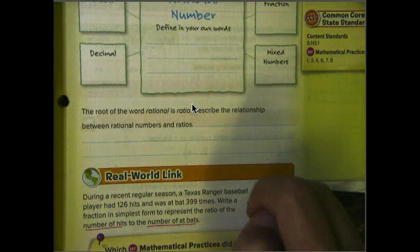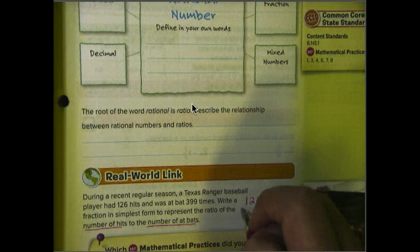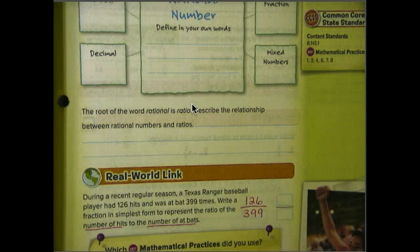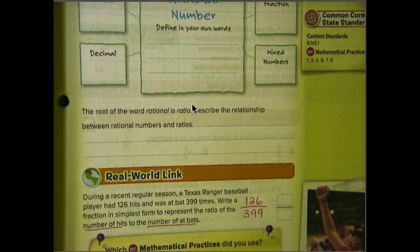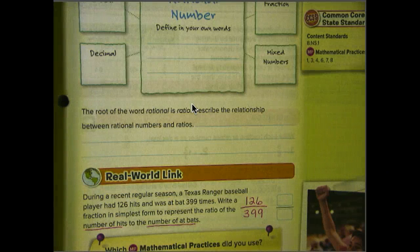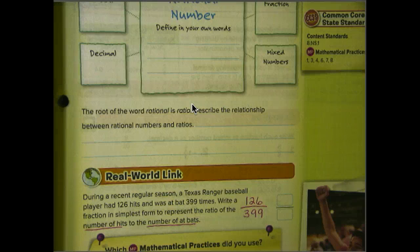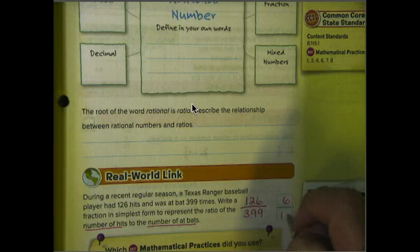Basically, we have number of hits, number of at bats. So the first thing we'll do is write it as our numerator, our number of hits, and as our at bats, our at bats as the denominator. So we have 126 over 399. If you were to simplify that, and you should know how to simplify fractions at this point. If not, you may need to go back to my summer videos to review. Once you simplify, you would get 6 over 19.